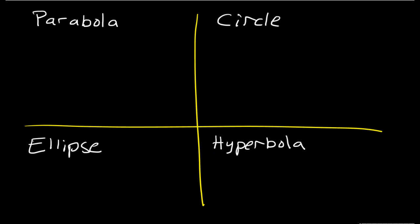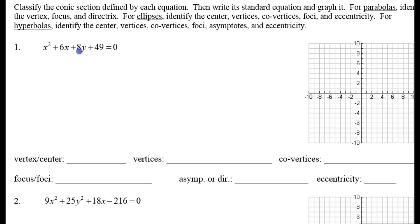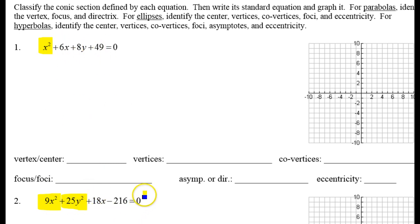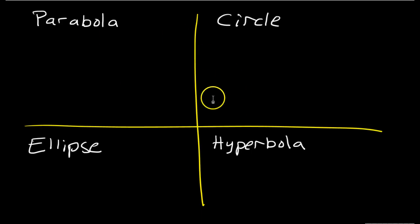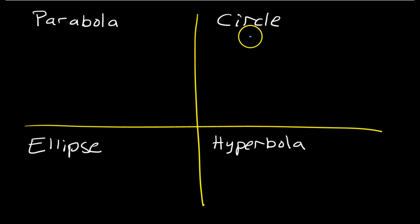If all you see is a general form equation, like you see in number one and number two, the first thing you need to understand is all you really have to pay attention to in terms of classification are the squared terms — x squared or y squared. The rest of the terms don't matter in terms of just identifying which one of these four things it is.